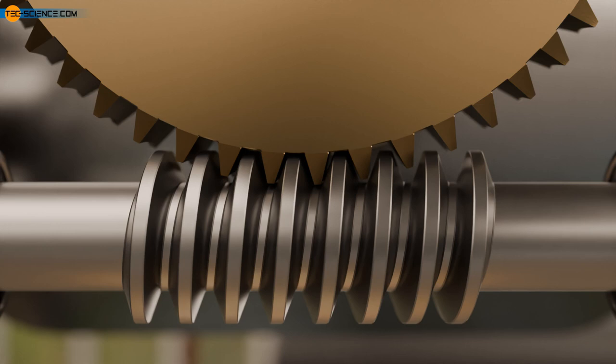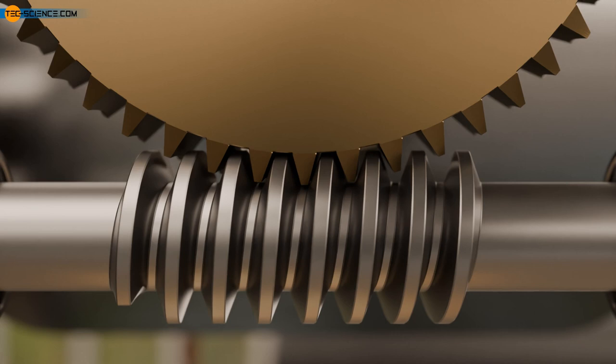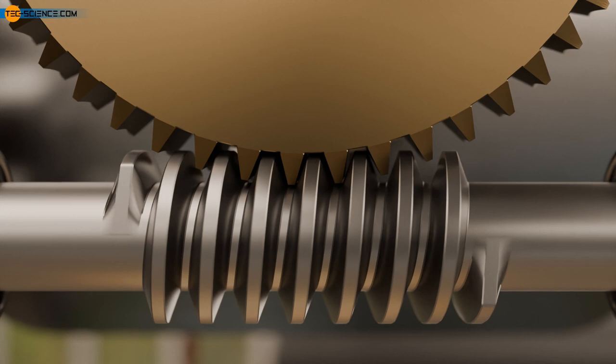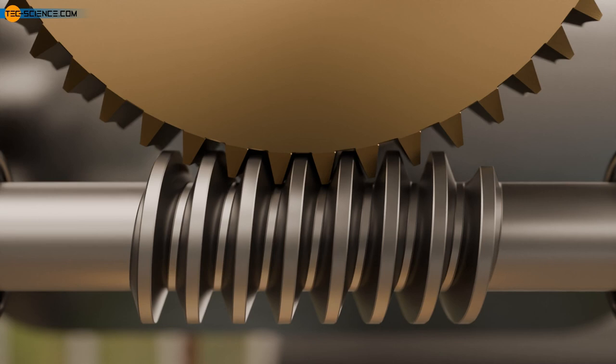For example, tin-based bronze is a suitable material for worm wheels. The combination of bronze and steel provides excellent sliding properties even under less-than-optimal lubrication conditions. In practice, however, the specific material pairing always depends on the individual case.